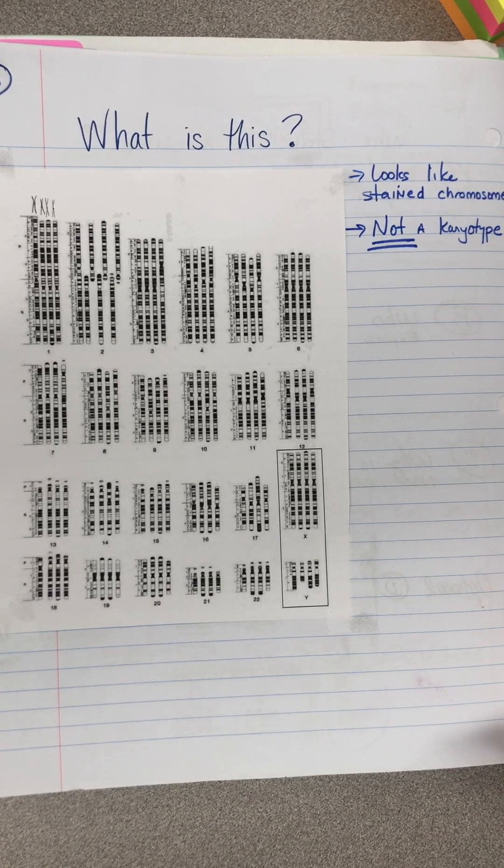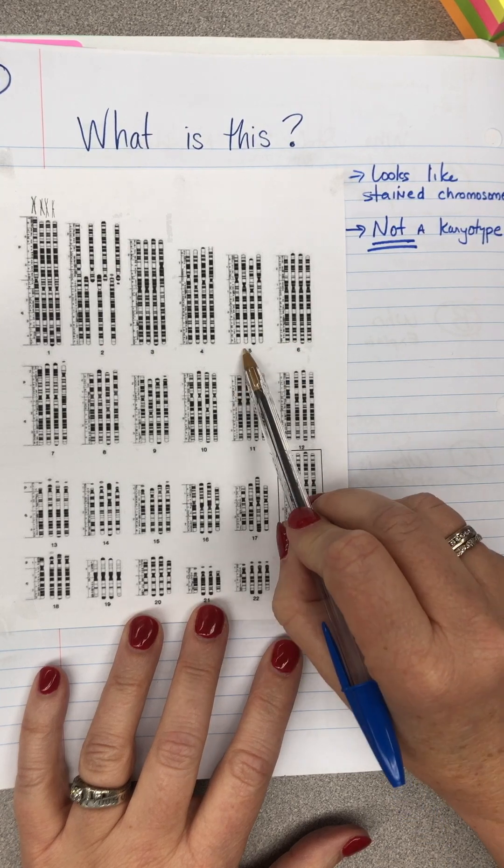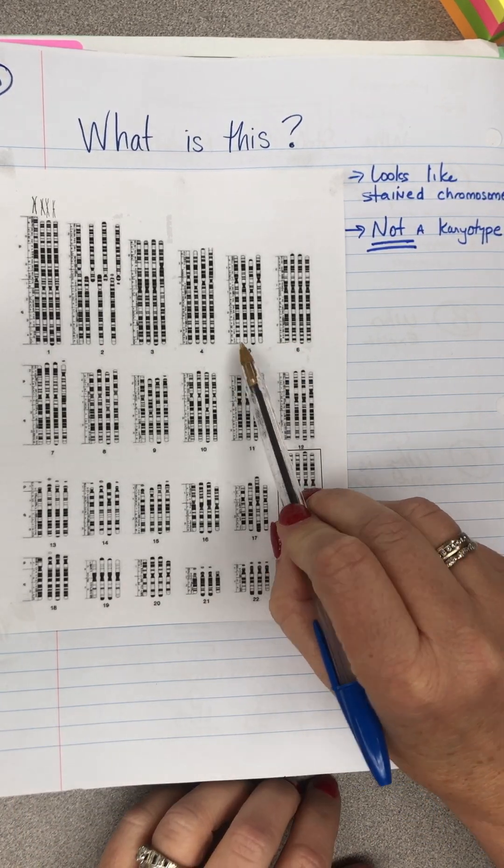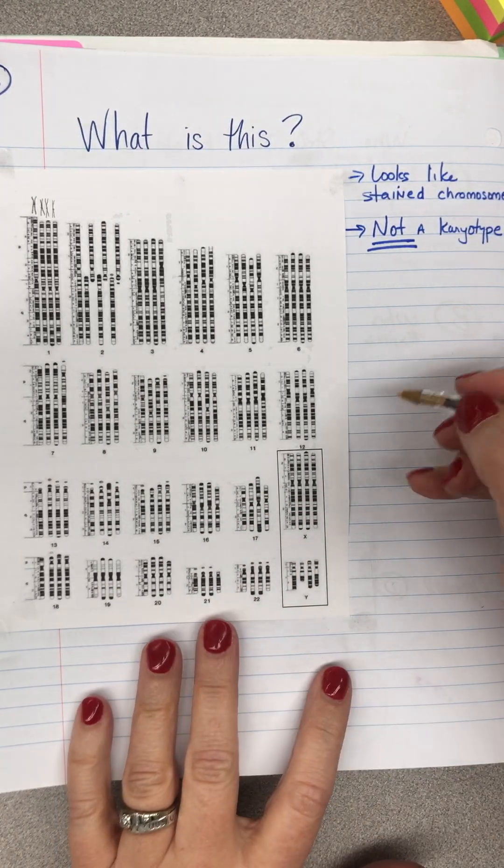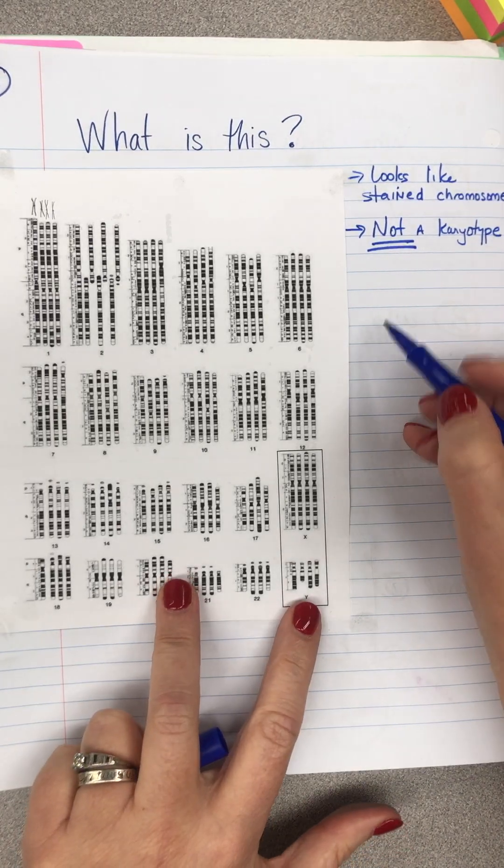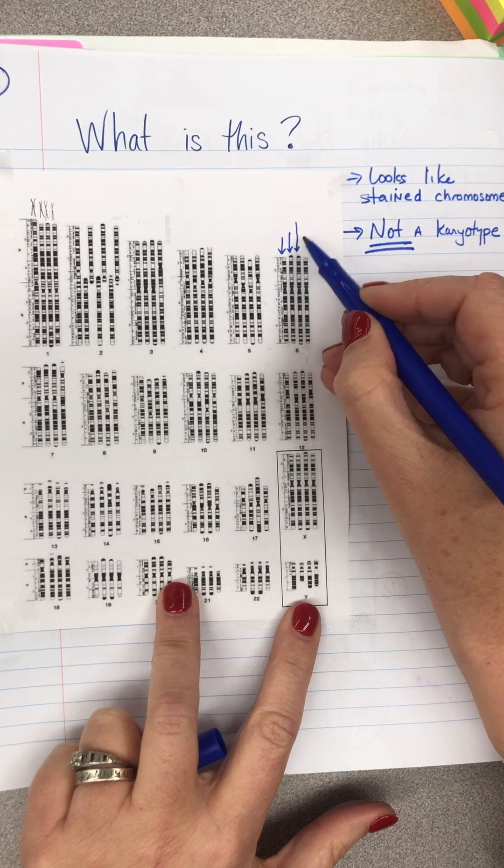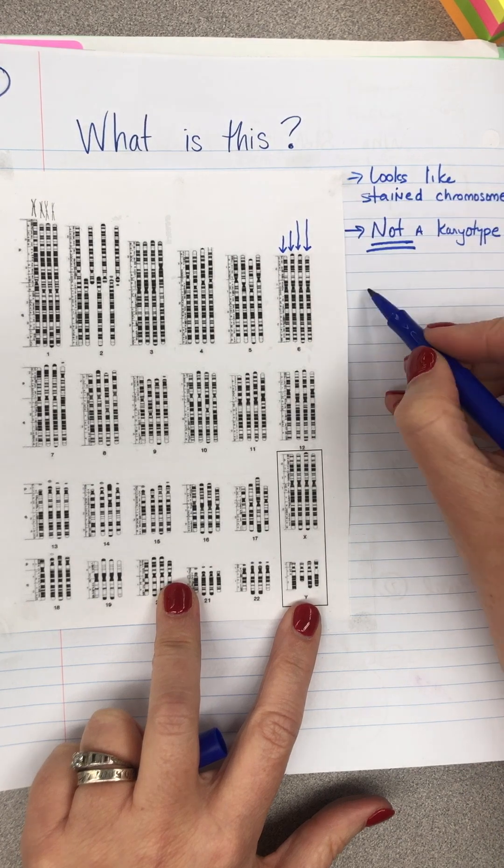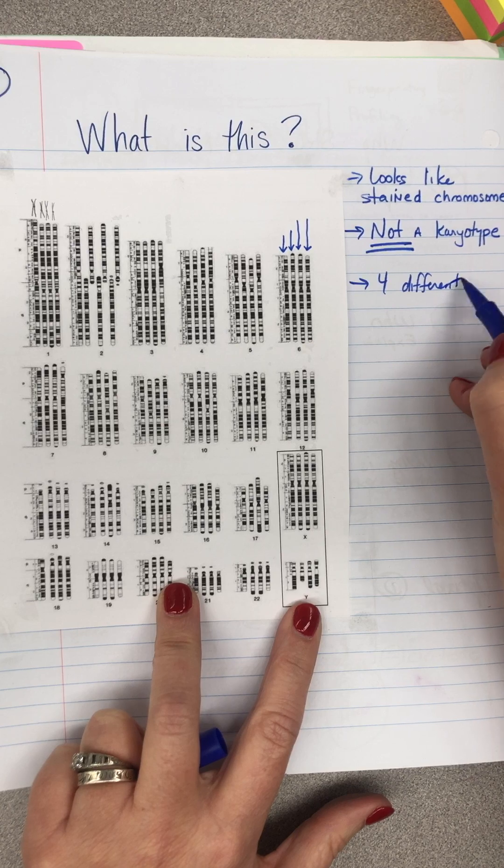But it is not a karyotype because this actually is for four different organisms. So instead of having two chromosomes from one organism and then two from the same organism at this pair and this pair, instead we just took one chromosome, but in each different location we actually have a different organism. So this, this, that, and that are four different organisms.